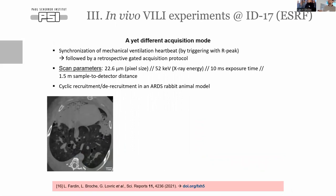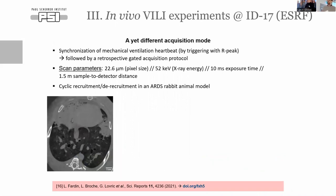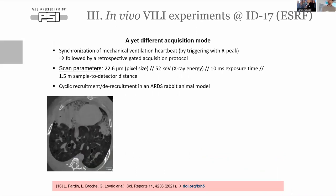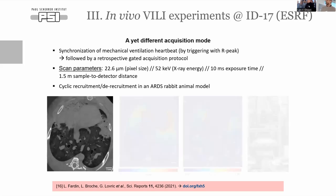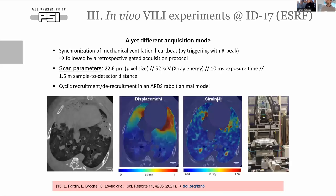In parallel we used a similar animal model in rabbits at ESRF, remodifying the technique to enable true 4D imaging — decoupling heart movement and lung movement and studying them together. Here we could really study displacement and strain within the lungs.